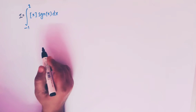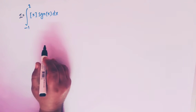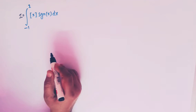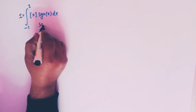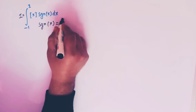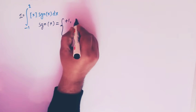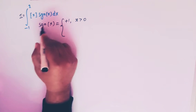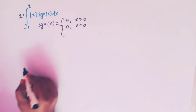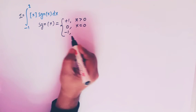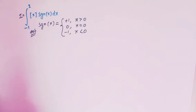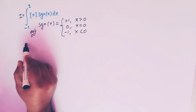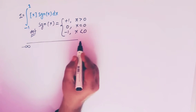Before evaluating, let us first take the standard definition of the signum function. We know that signum of x is defined as positive one whenever x is greater than zero, signum of x equals zero whenever x equals zero, and signum of x equals minus one whenever x is less than zero.